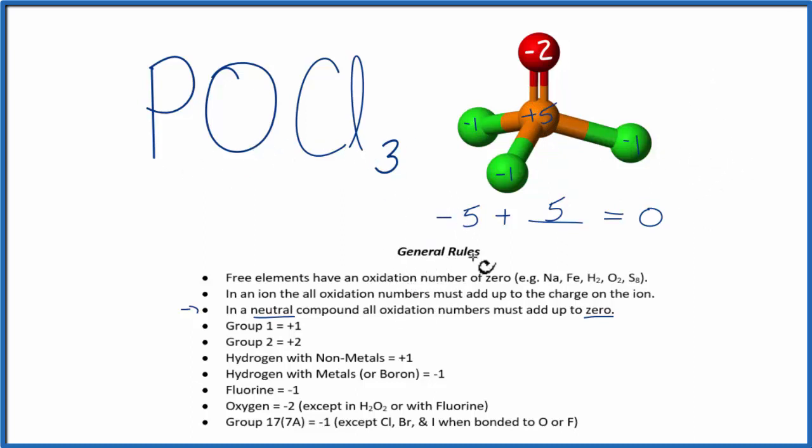To recap, we found the oxidation numbers of the elements we knew, and we used that, along with the fact that a neutral compound has all its oxidation numbers adding up to zero, to figure out the one we didn't know, the phosphorus.